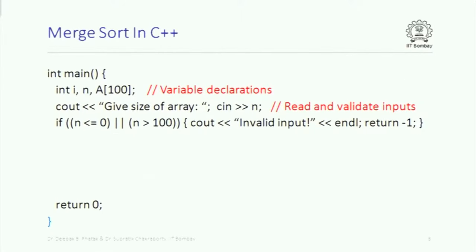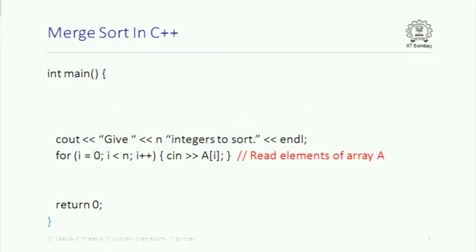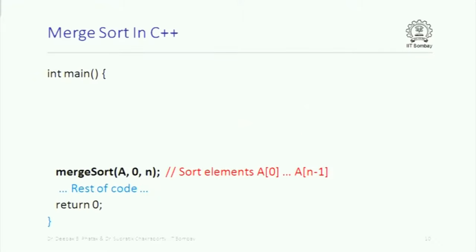Here is how you might write merge sort in C++. This is some simple input handling and validation. We have taken an array A of size 100, which means we will store at most 100 integers to sort. Then we read in the integers and call the function mergeSort(A, 0, N). A is the array, and 0 and N basically say that the part of interest is between index 0 and N minus 1.